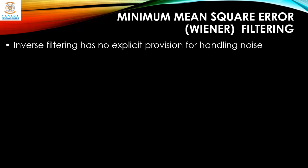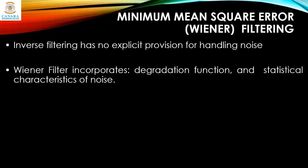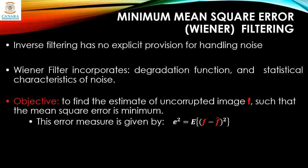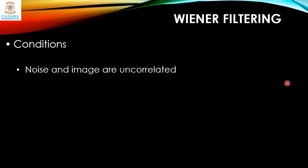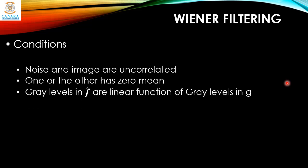The next filter we study is the Wiener filter, also called the minimum mean square error filter. The problem with inverse filtering is that it has no explicit provision for handling noise. The Wiener filter incorporates both the degradation function and statistical characteristics of noise in the restoration process. The objective is to find an estimate of the uncorrupted image such that the mean square error is minimum. It is assumed that noise and image are uncorrelated, and the gray levels in the estimated image F̂ are a linear function of gray levels in G.